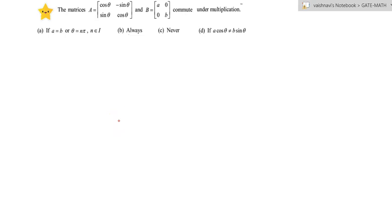The matrices A equal to [cos theta, -sin theta; sin theta, cos theta] and B equal to [a, 0; 0, b] commute under multiplication. Option A: if A is equal to B or theta is equal to n pi where n belongs to integers. Option B: always. Option C: never. Option D: if a cos theta will not be equal to b sin theta.